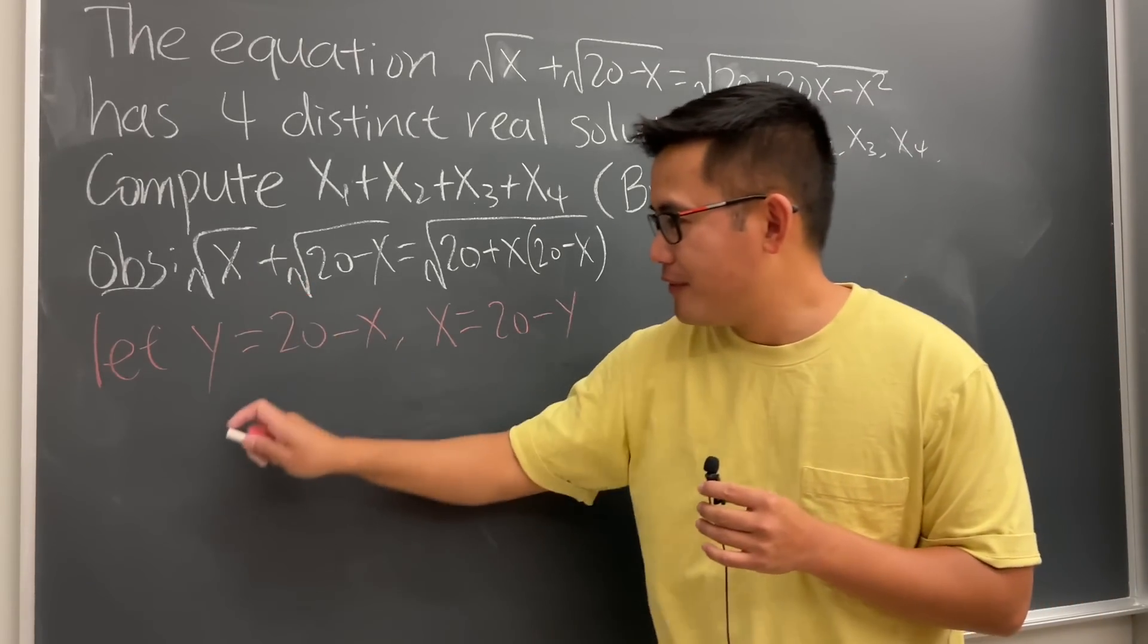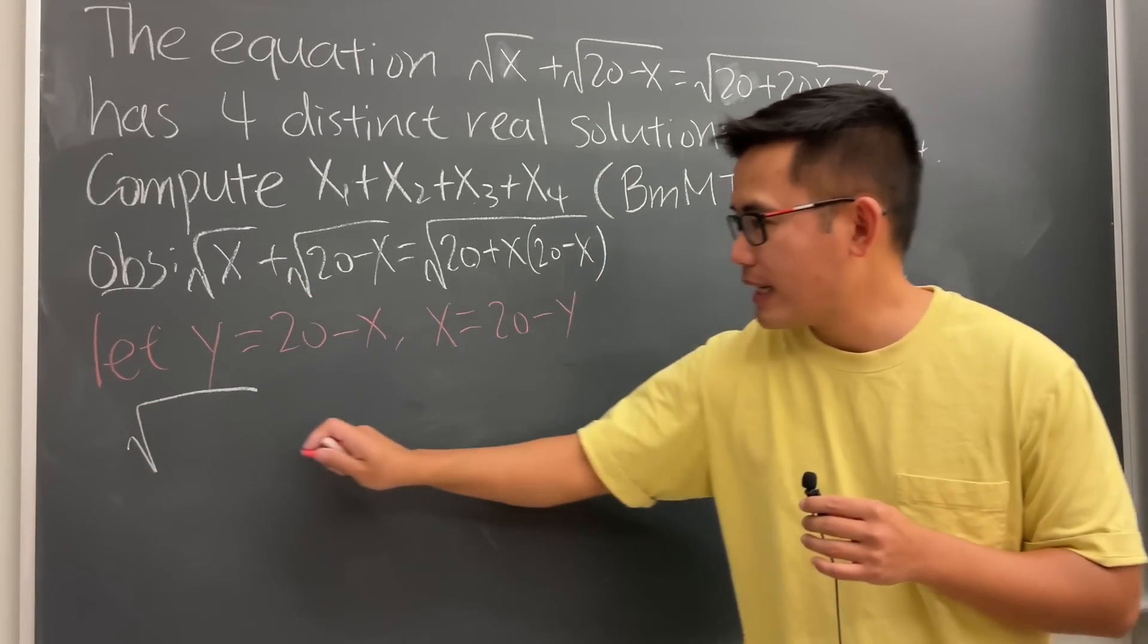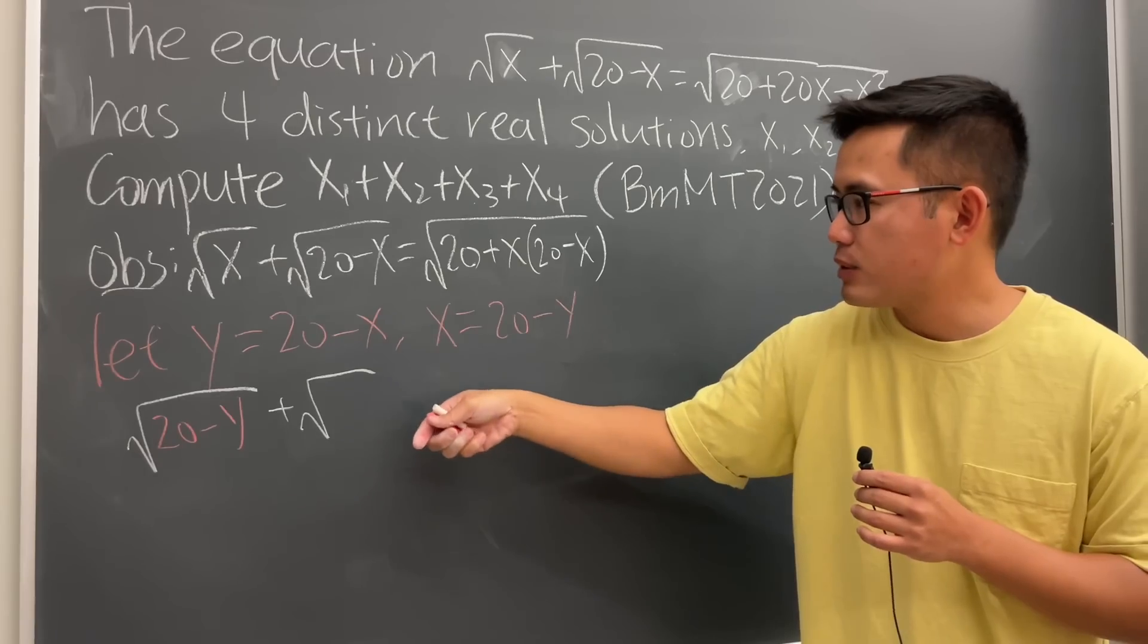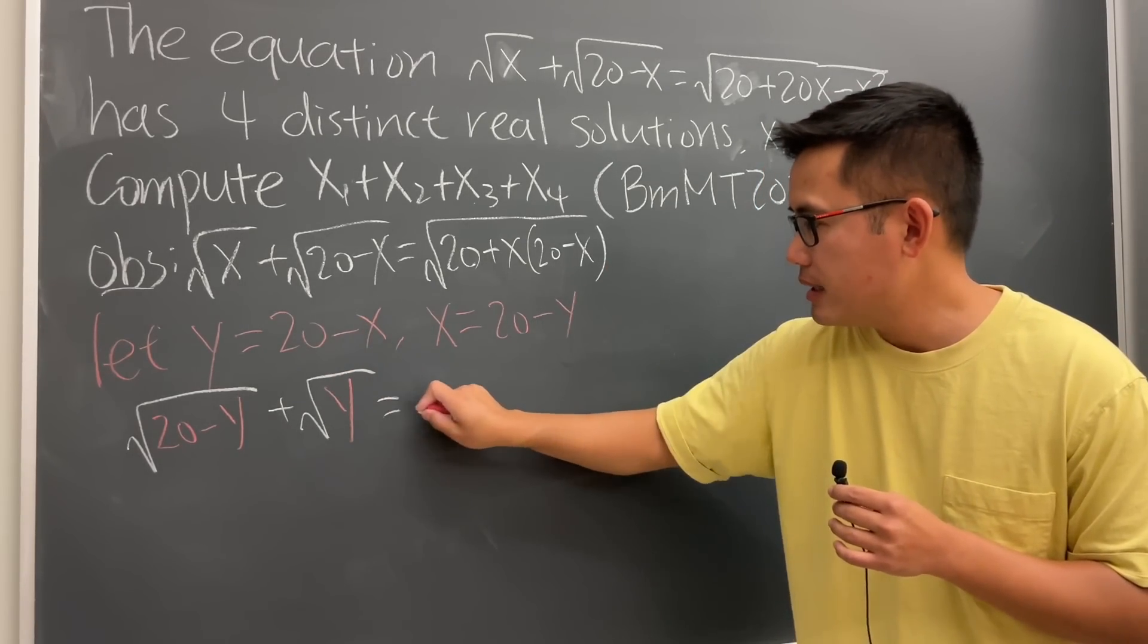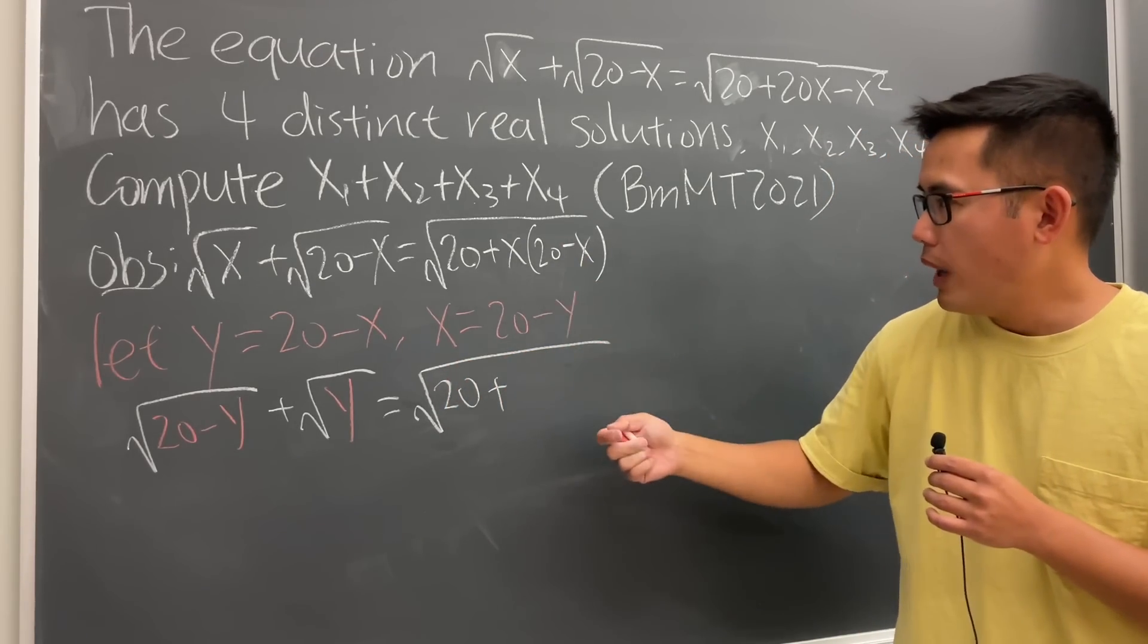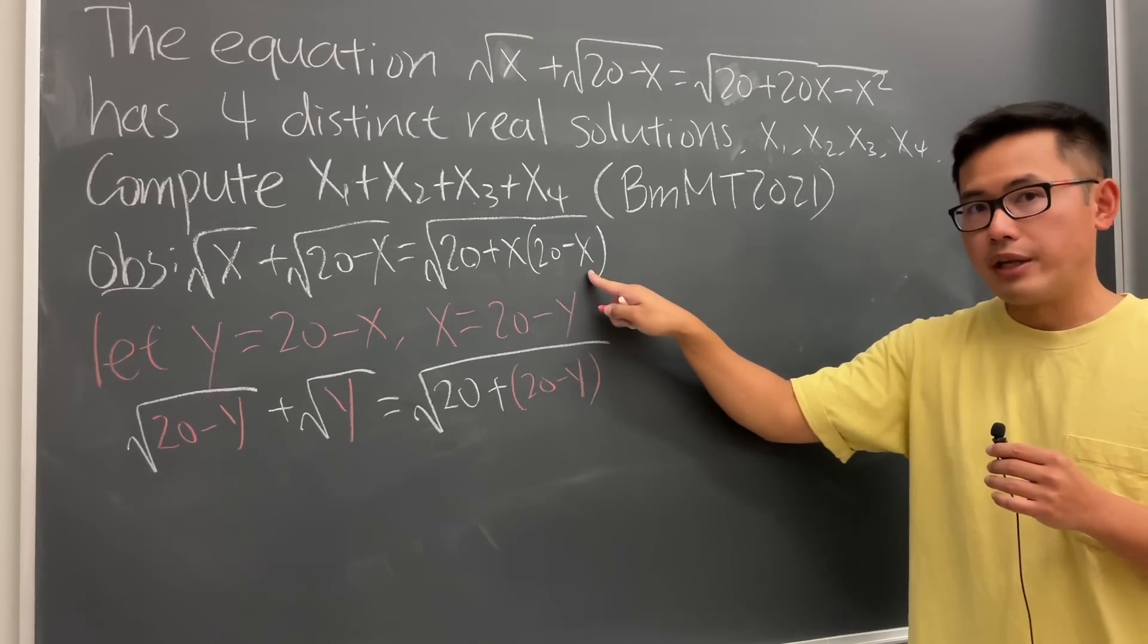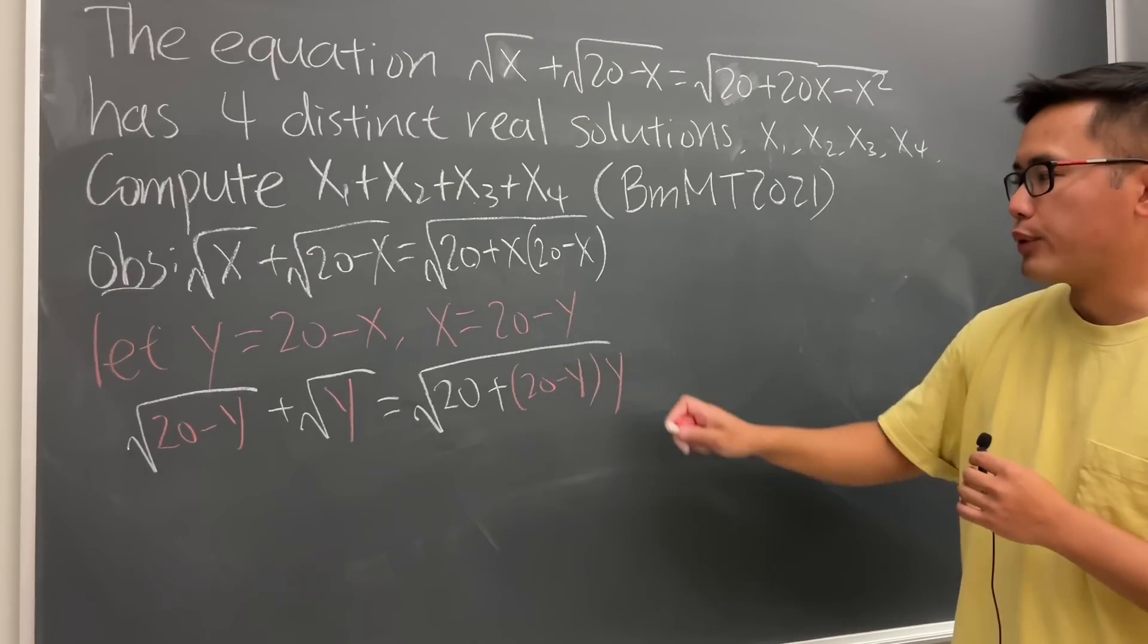For the first part, we can write this as square root, and for the x, of course, we know that's 20 minus y now. And then next, we have square root of 20 minus x, which is precisely our y. And then continue, we will get square root, and then this is 20, plus the x is that. So I will just put this as 20 minus y. And lastly, this right here is just y. This is so nice.